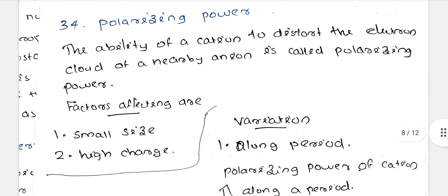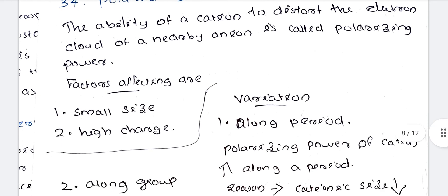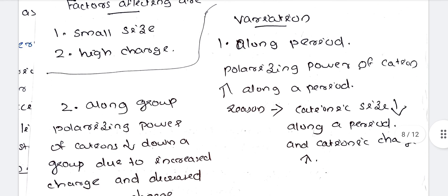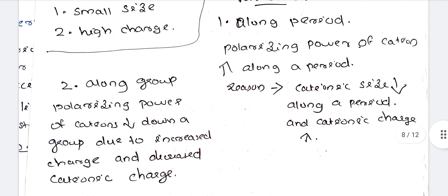Next, polarizing power. The ability of a cation to distort the electron cloud of a nearby anion is called polarizing power. This depends on two factors: small size and high charge.